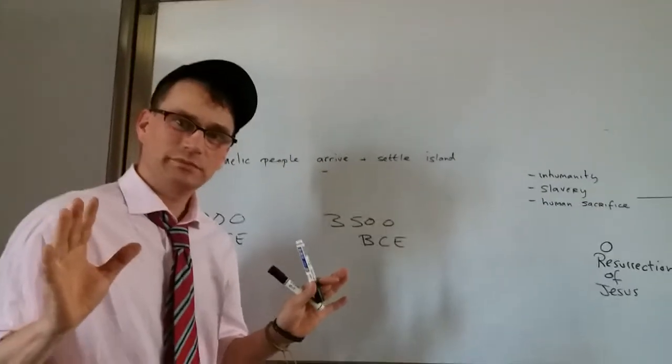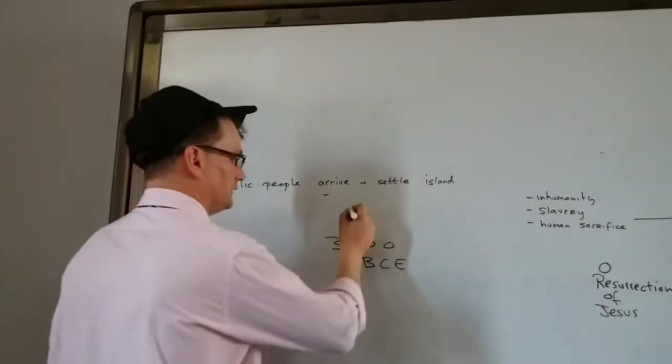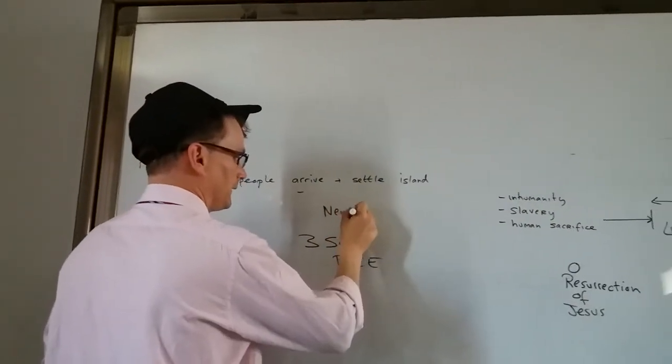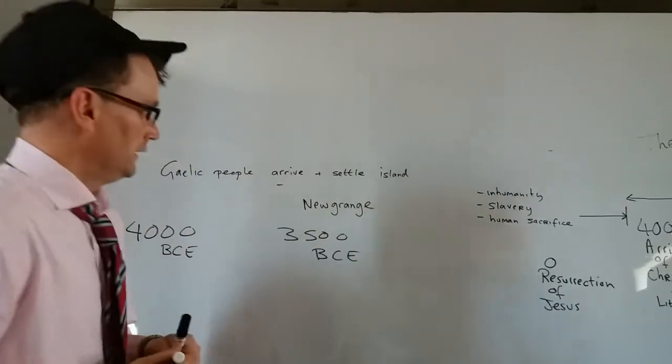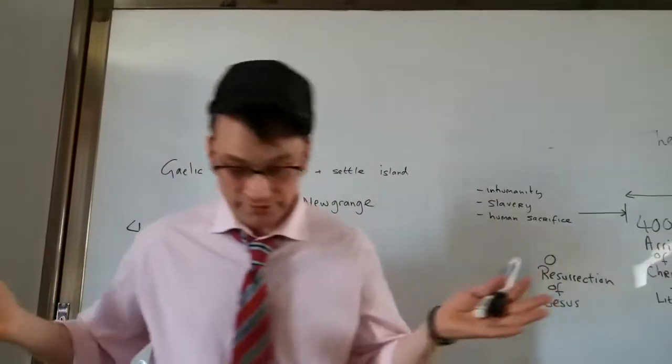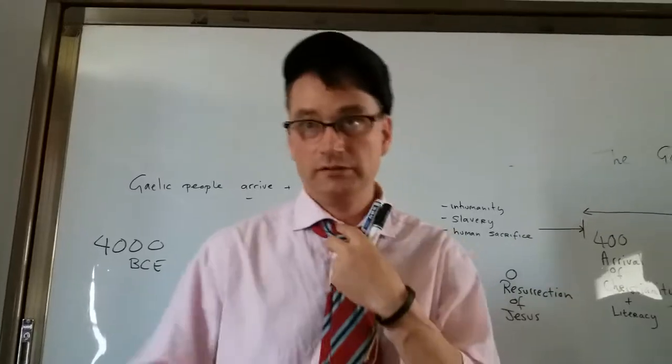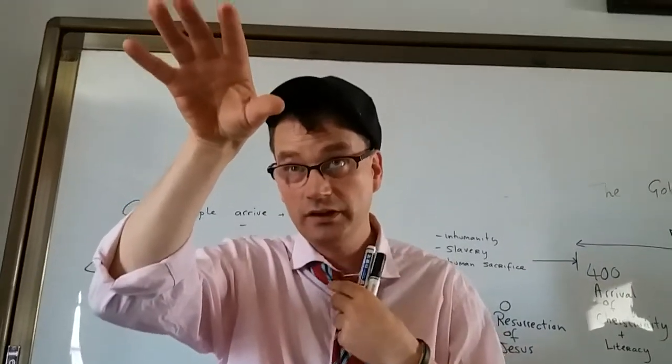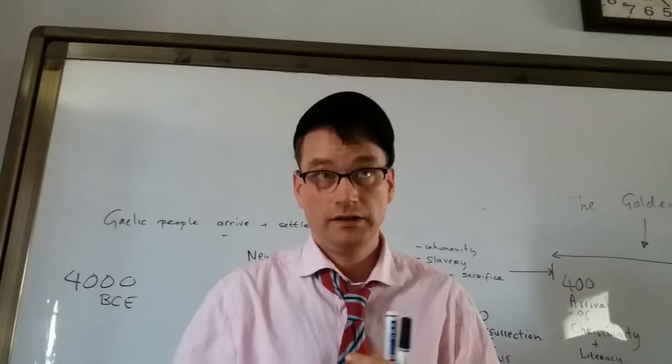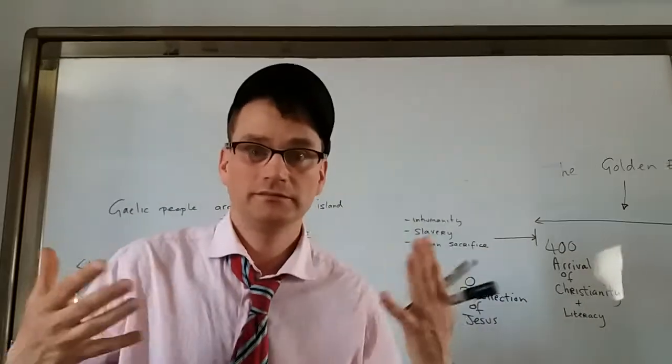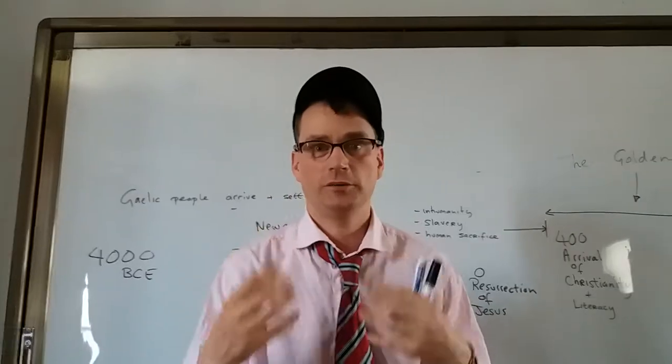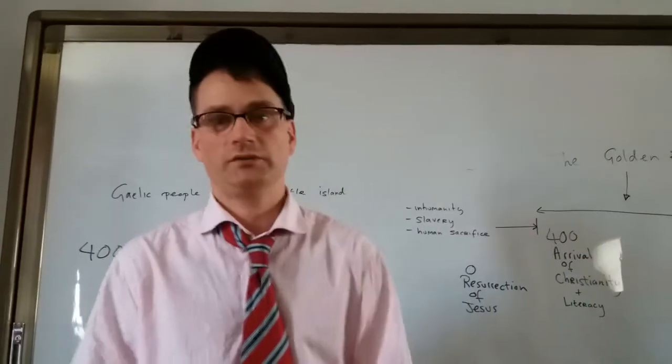Because Newgrange was constructed 3,500 years before Christ. I don't want to draw a Newgrange. Just Google it. I'll write it down. And it's a beautiful structure, and it's a calendar, basically, and it shows the rising of the solstice sun in winter. And this is how we formulate time. We're starting to formulate time for growing patterns and stuff like that.